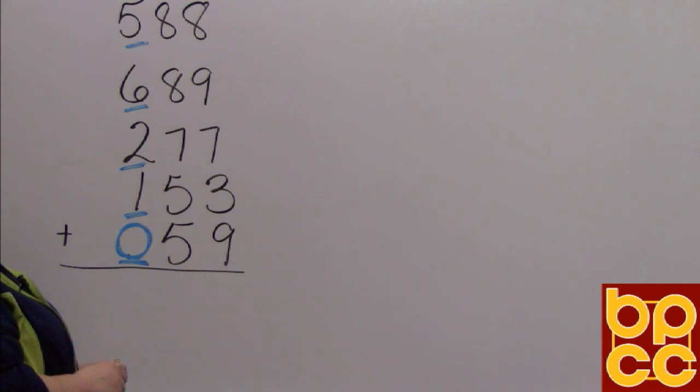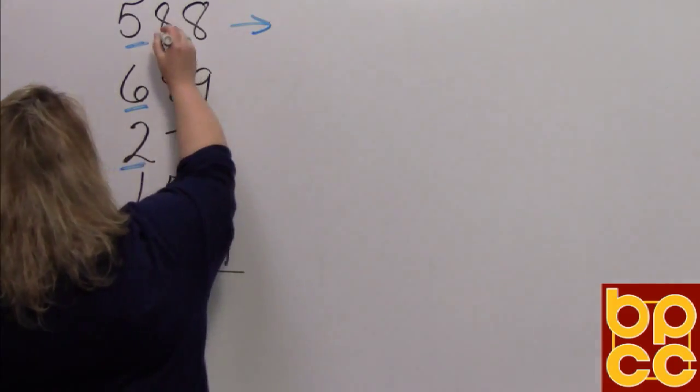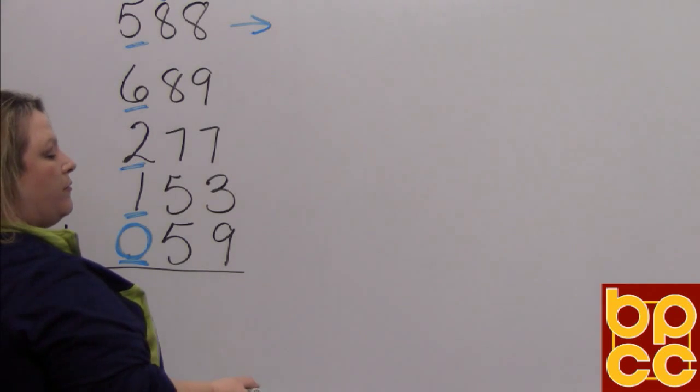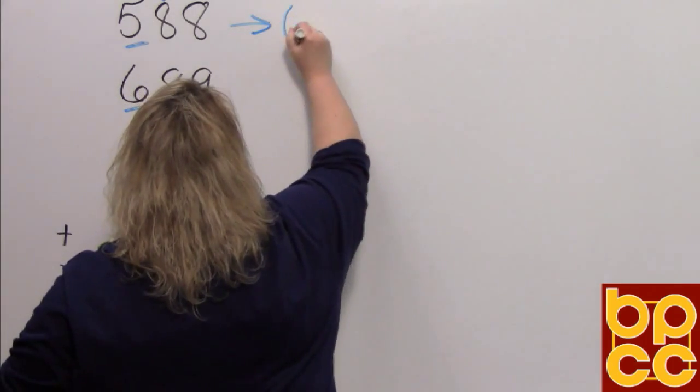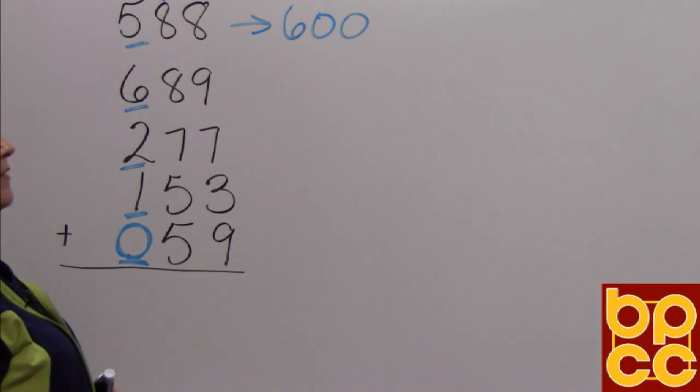Now we're going to round to the hundreds place. So what does it tell you to do? It tells you to look next door. So if I look next door to 588, if I look next door to the five, I see an eight. Is that zero to four? No, it's five or more. Since it's five or more, we're going to round it up to six, and all the digits behind it will become zeros, just like in the previous lesson.